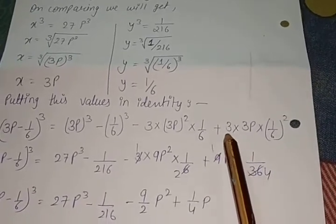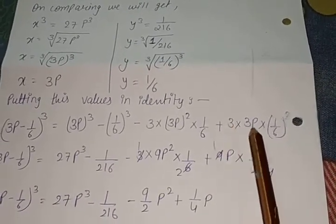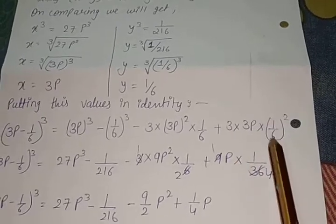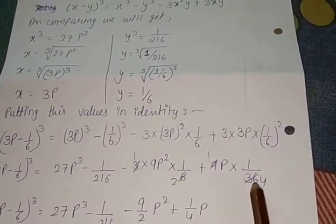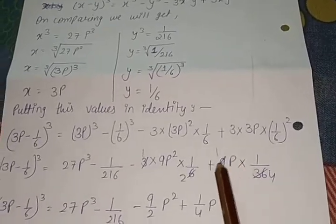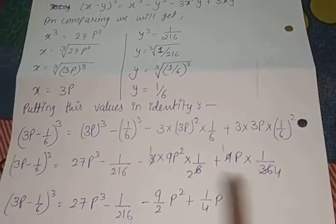Again, in this term, we have 3 as it is. 3 × 3 is 9p. And 1/6, 1² is 1, 6² is 36. And 9 and 36 have the same table. 9 × 1 is 9, 9 × 4 is 36. So we have to simplify these terms.